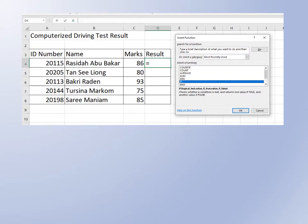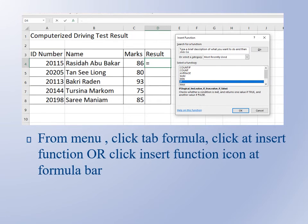Excel has simplified this for you in case you don't remember how to write the formula. Just click or find the Insert Function from the menu bar—click the Formula tab and click Insert Function, or click the Insert Function icon at the formula bar.